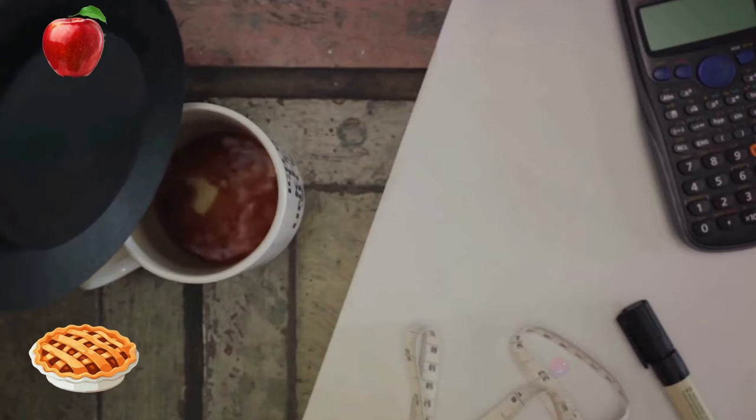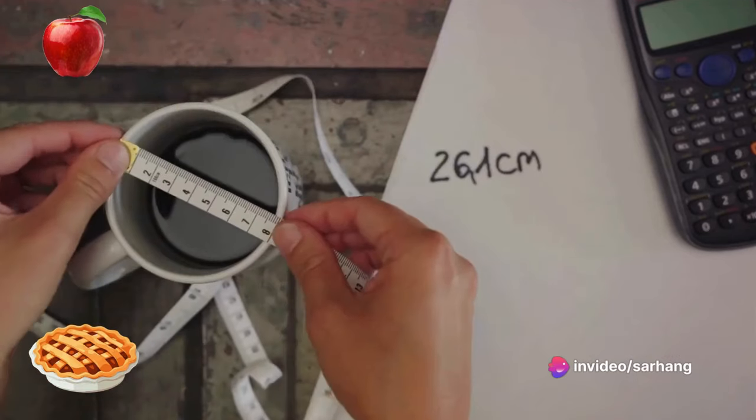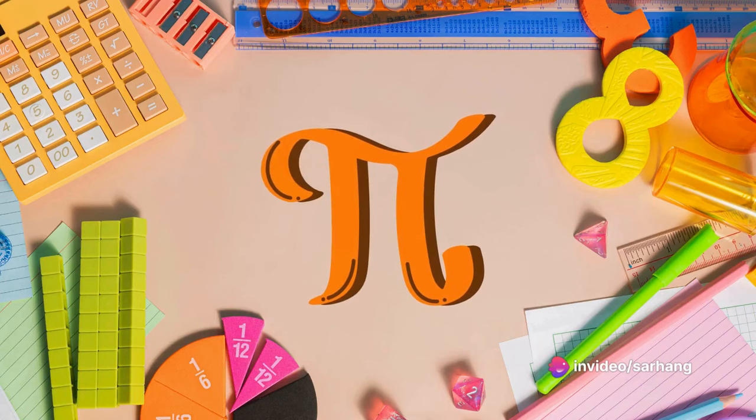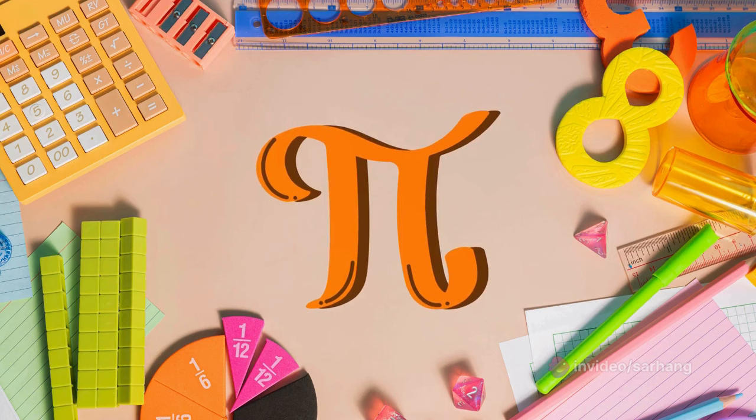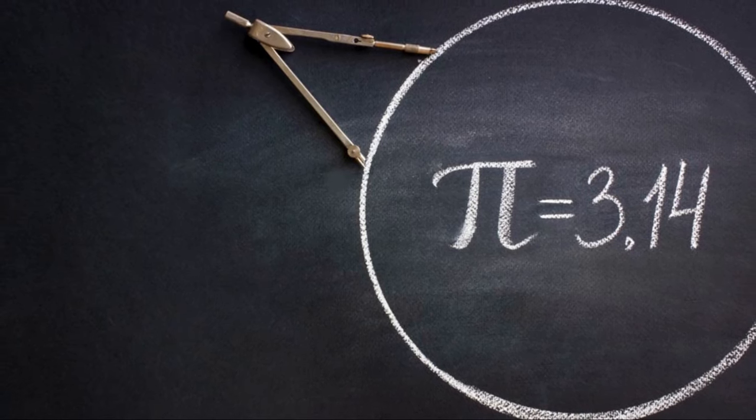To do this, we need to wrap a string around the circle and then measure the length of the string. We then need to measure the distance across the circle from one side to the other. If we divide the circumference by the diameter, we will get a number that is very close to pie.